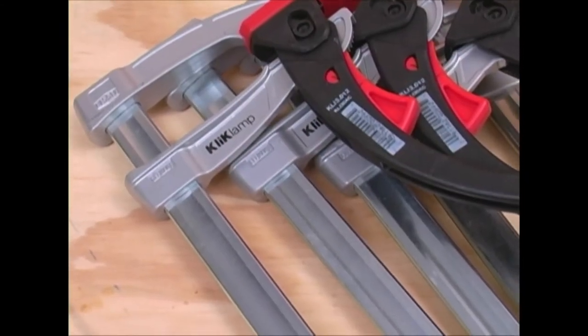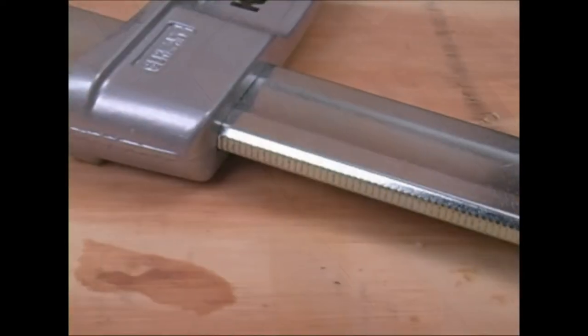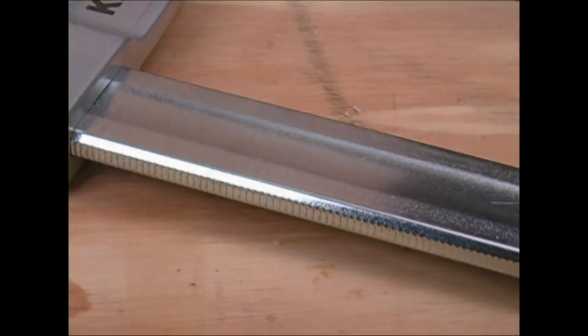These clamps are manufactured from high-quality materials in Bessie's high-tech German facilities. The steel bars have the familiar Bessie hourglass shape for rigidity.